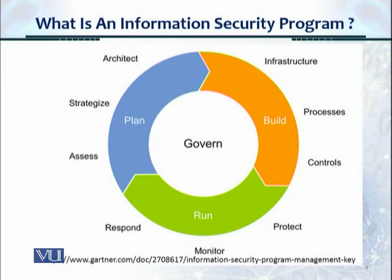Here's a diagram showing the entire lifecycle of an information security program and the various activities conducted by a chief information security officer or the information security team. Looking at the blue plan part: the information security program begins with an assessment of where we stand right now, then we create a strategy for how we are going to run the entire program, and then we create an architecture and design the security components and security controls.